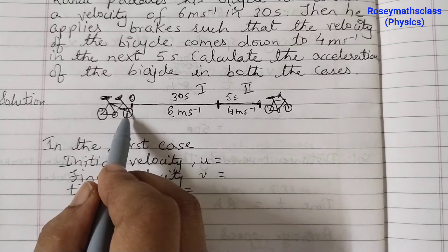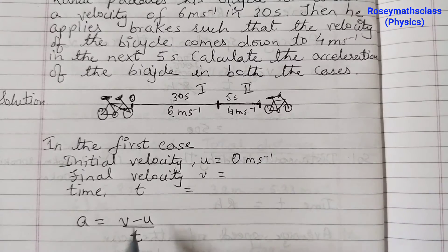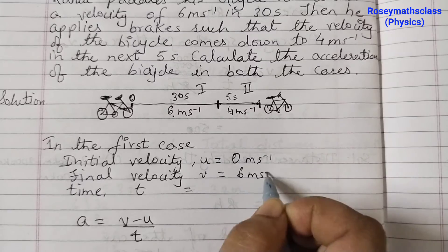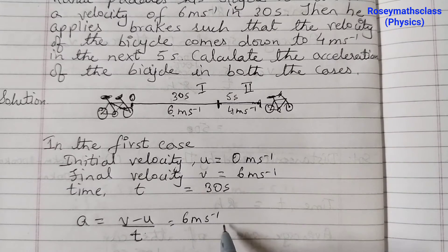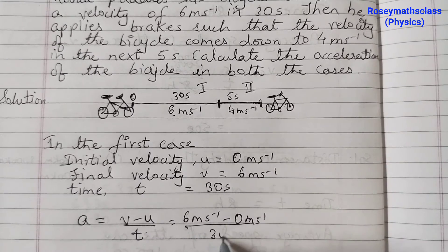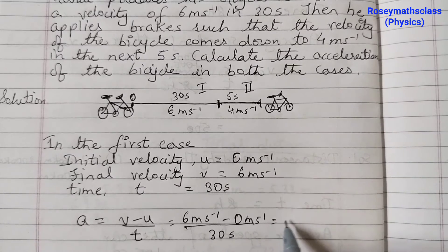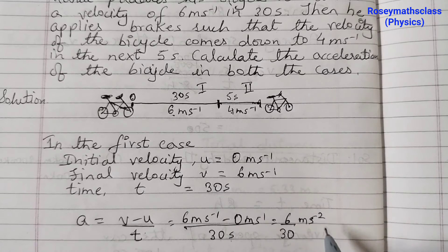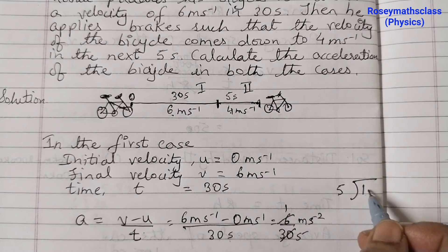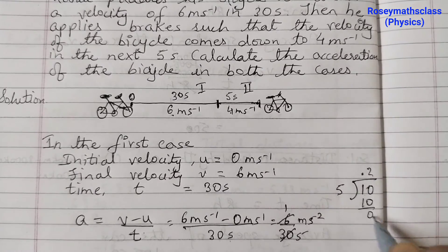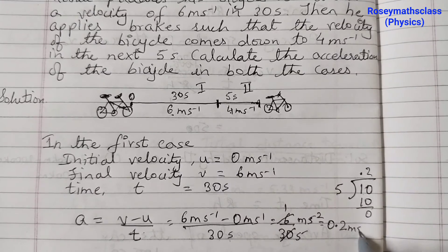In the first case: initial velocity u = 0 m/s, final velocity v = 6 m/s, time t = 30 seconds. The formula of acceleration is: a = (final velocity − initial velocity) / t. So that's (6 − 0) / 30 = 6/30 meters per second squared. Doing the division: 6 divided by 30 equals 0.2. So the acceleration in case 1 is 0.2 meters per second squared.